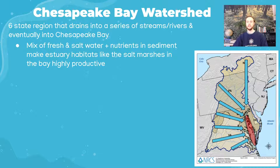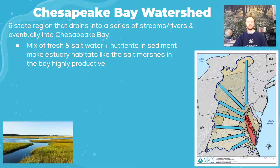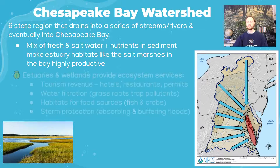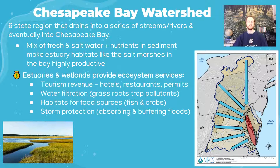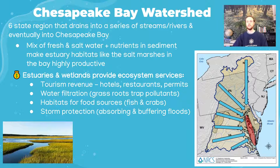One such estuary habitat in the Bay is a salt marsh. You can see the grasses and low meandering waterline — it's a really productive habitat. Because it's so productive, it offers many ecosystem services, which have monetary benefit to humans. Tourism is one: people come, stay in hotels, pay for tours, hike, and enjoy the natural beauty. There's also significant water filtration — estuary habitats and wetlands are effective at trapping pollutants and recharging groundwater with cleaner water.